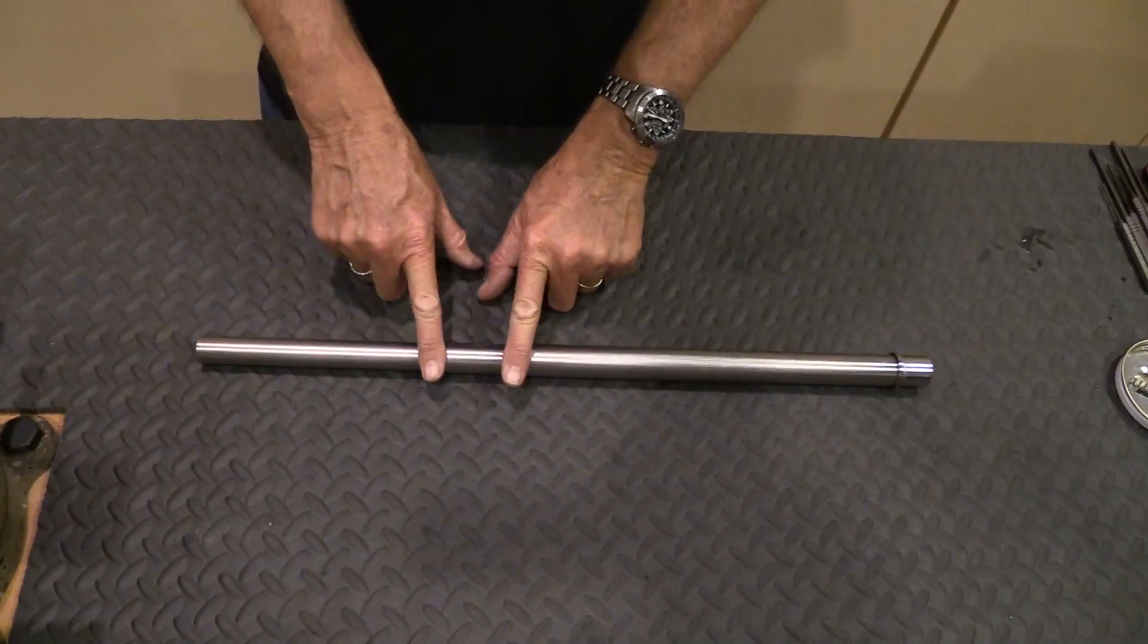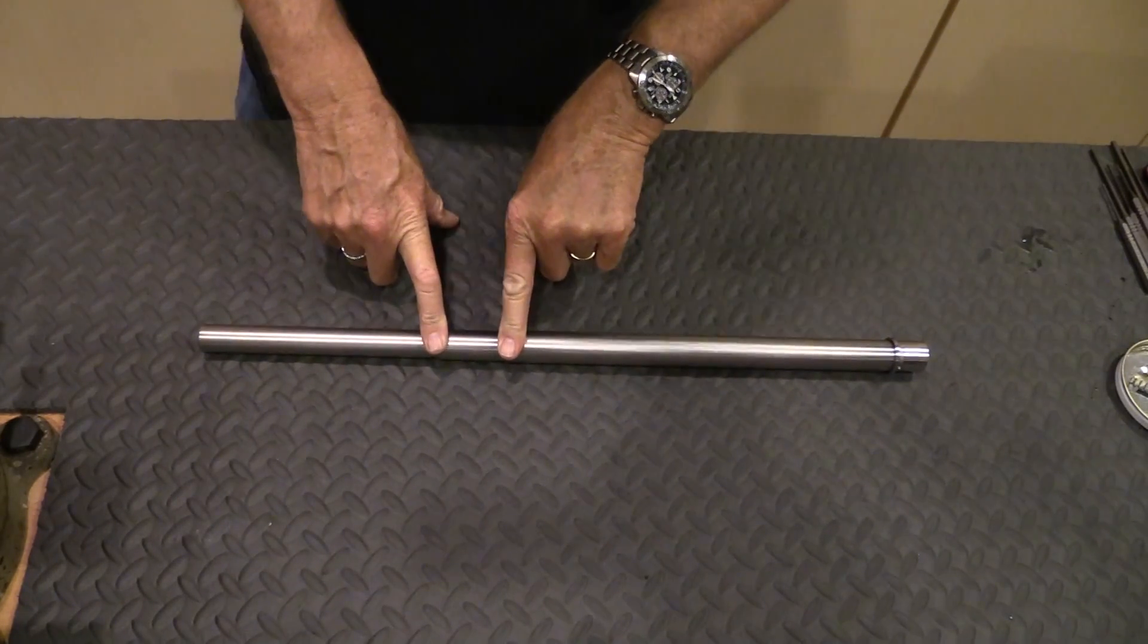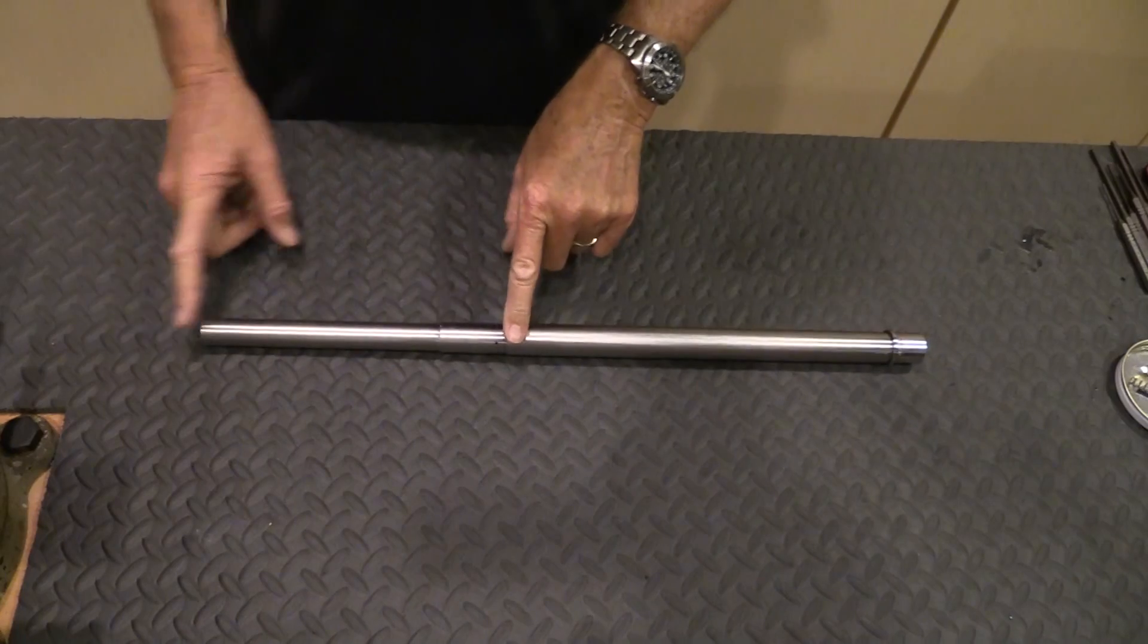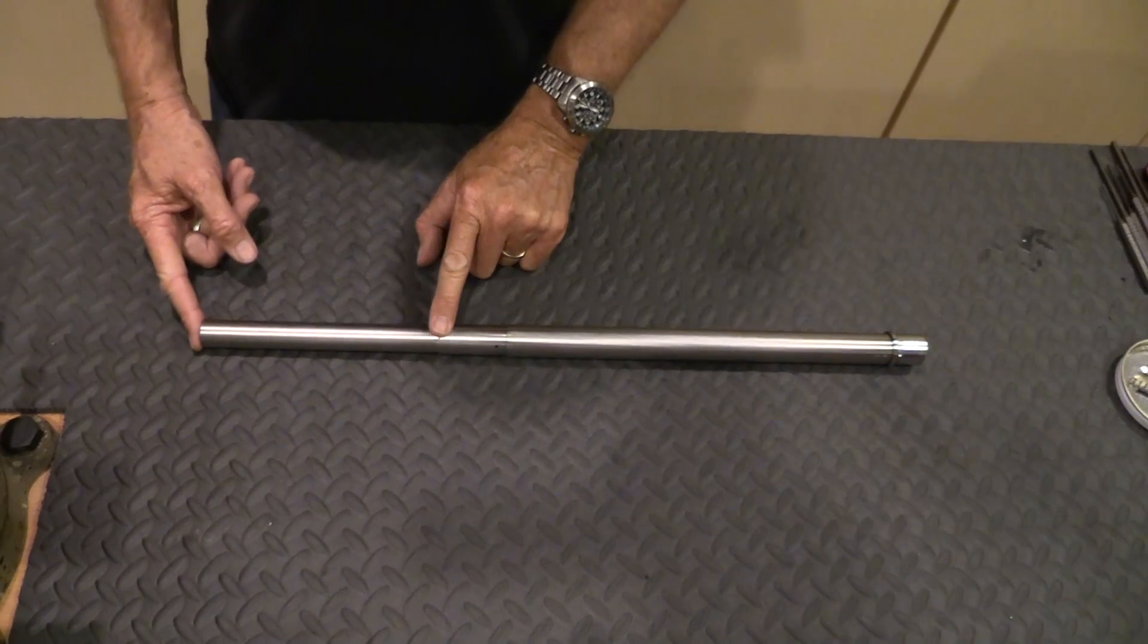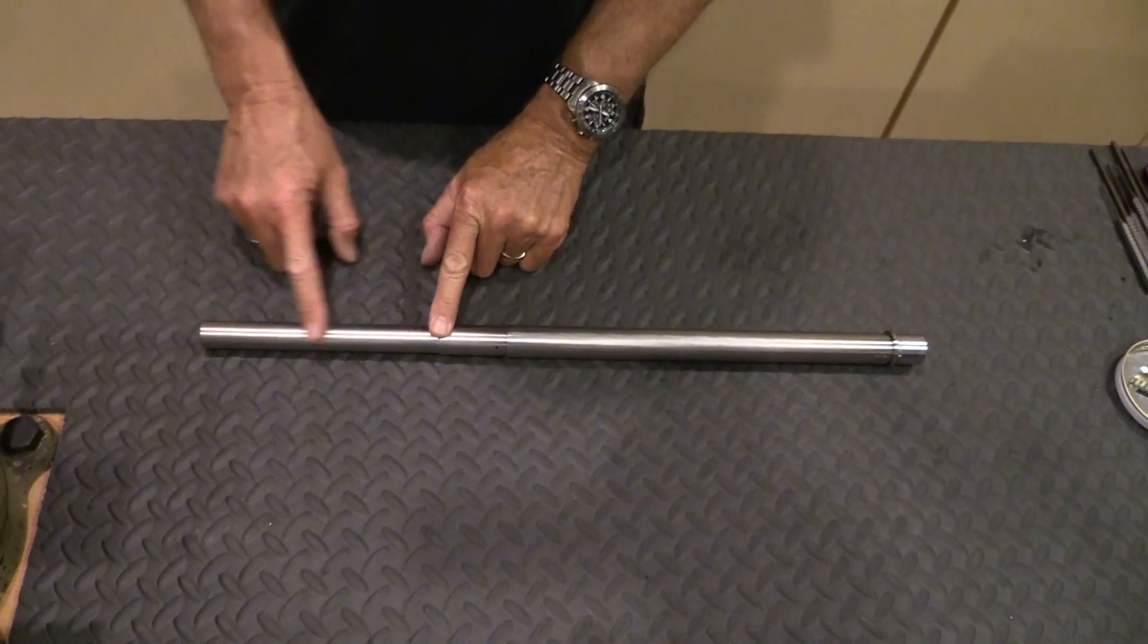This next small section where the gas block goes is actually .939 inches in diameter and it's about 2 inches long. And then the rest of the barrel is .855 inches in diameter and it's 7 inches long.